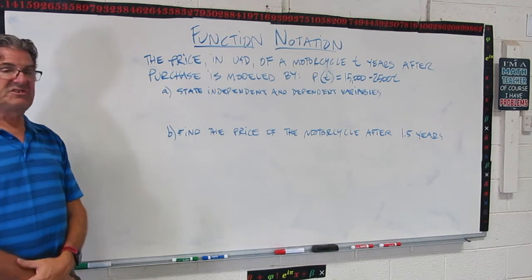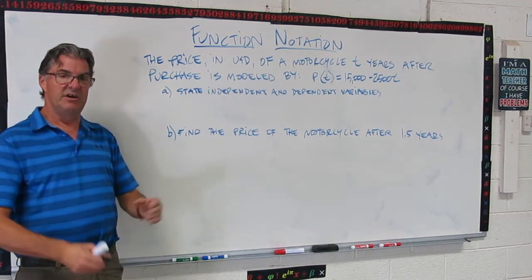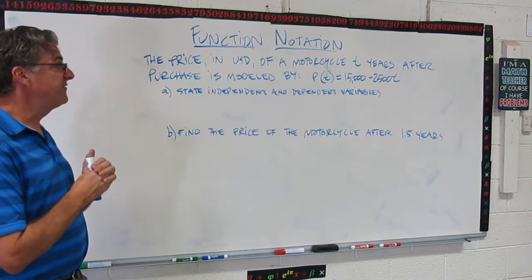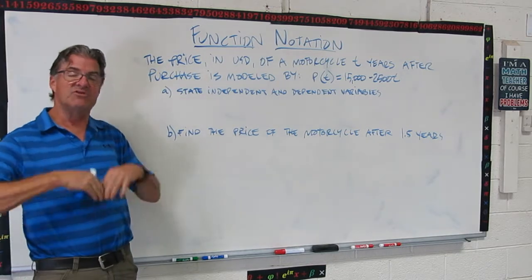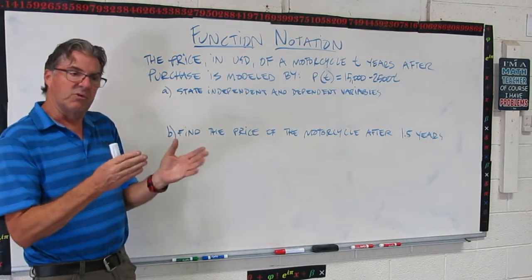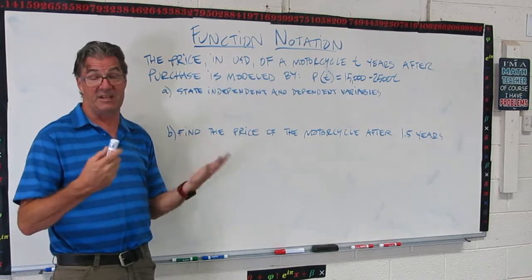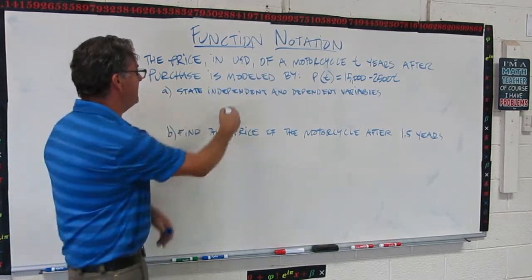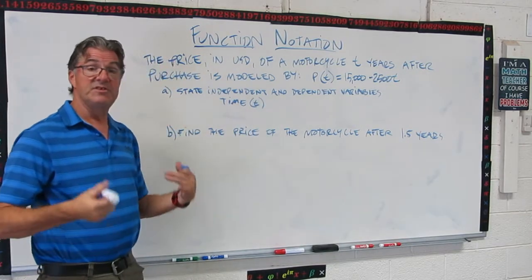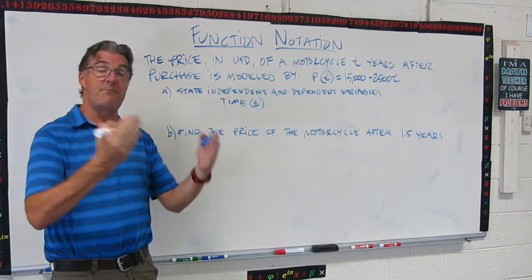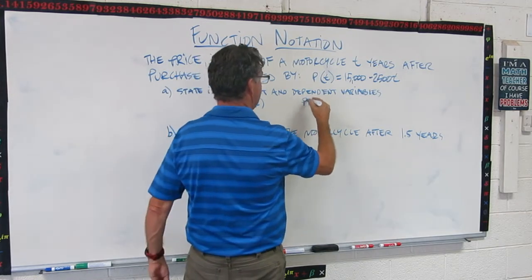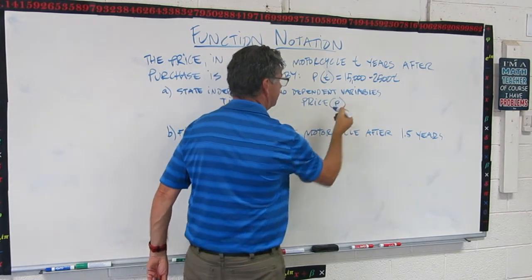First question. State the independent and dependent variables. So pause the video and think about that for a minute. The independent variable is the time. Almost always when you have time, that's the independent variable because that's the one that we pick. We're going to analyze it at one year or three years or five years or something like that. So time would be the independent variable right there. Time and that's t. And the dependent variable is price because price depends on the time passed. So this would be price and that's p.